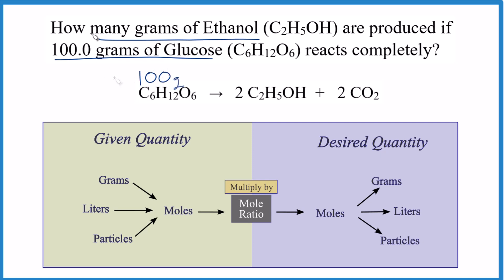Let's write that in. We want to know how much ethanol we end up with, and that's going to be in grams as well. The process is we're given a quantity and we want to find another quantity. We're given 100 grams here of the glucose, and we want to figure out how many grams of the ethanol we end up with.